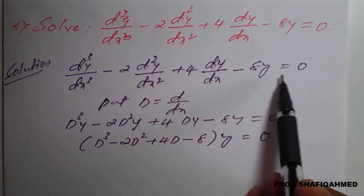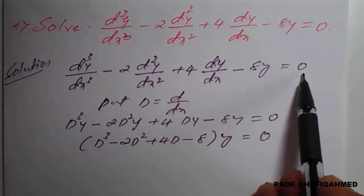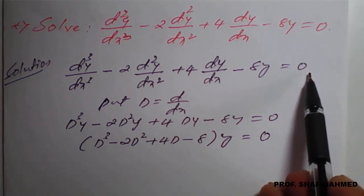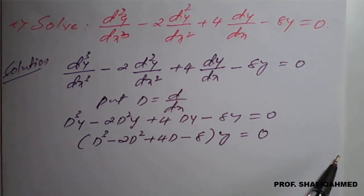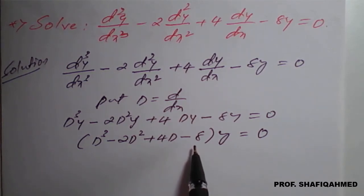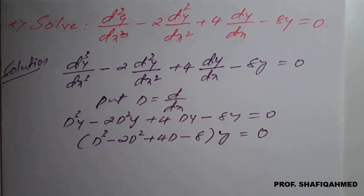You can see that the given differential equation is homogeneous because the right-hand side equals 0. If it were not equal to 0, it would be a non-homogeneous differential equation. For this homogeneous equation, we find the roots, convert them into a complementary function, and that complementary function is the final solution.